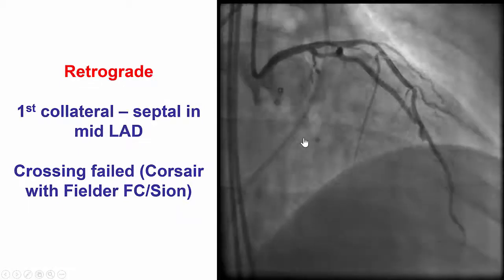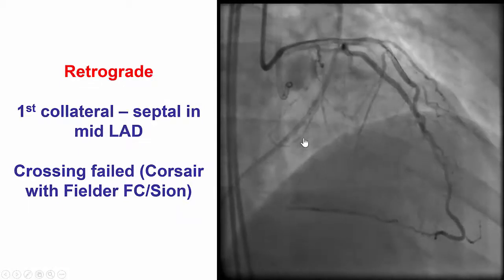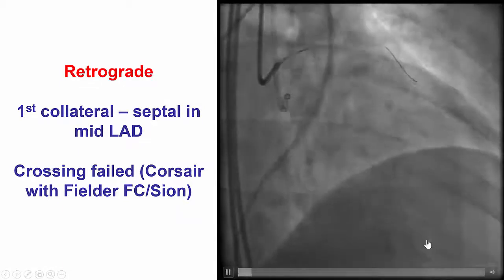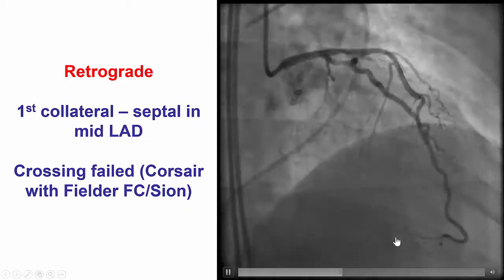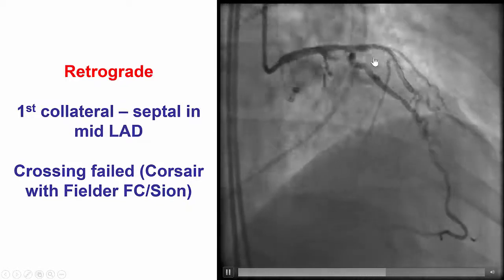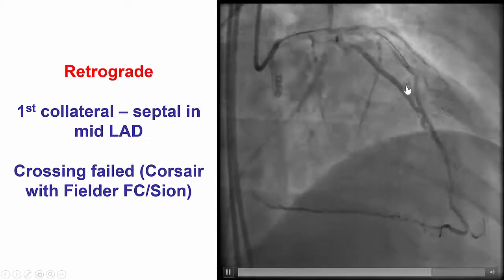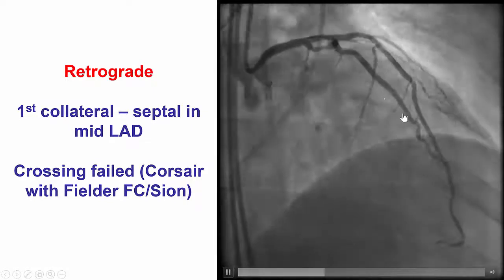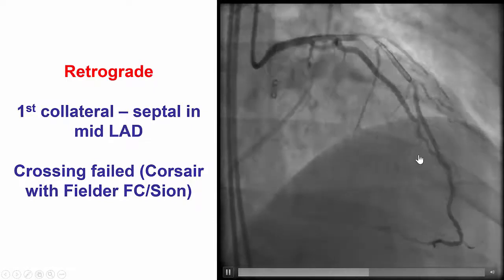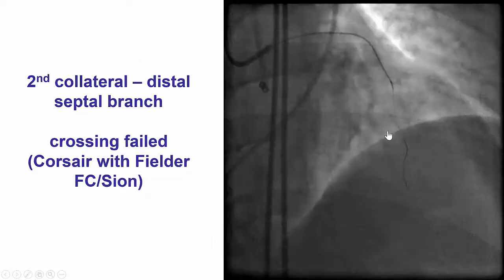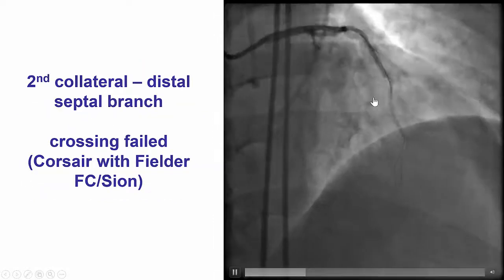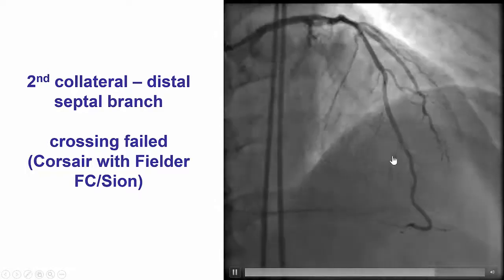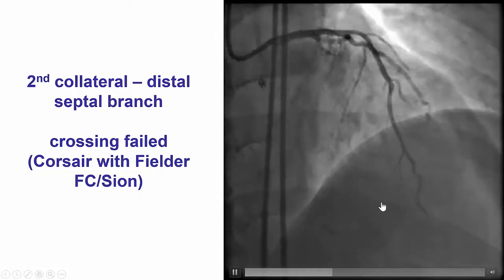We therefore switched to a retrograde approach. Although the biggest collateral was the epicardial from the distal LAD, crossing through septals is safer. So before going there, we first tried surfing of several of the septal branches. However, surfing was unsuccessful in both the more proximal as well as the middle and more distal septal branches.